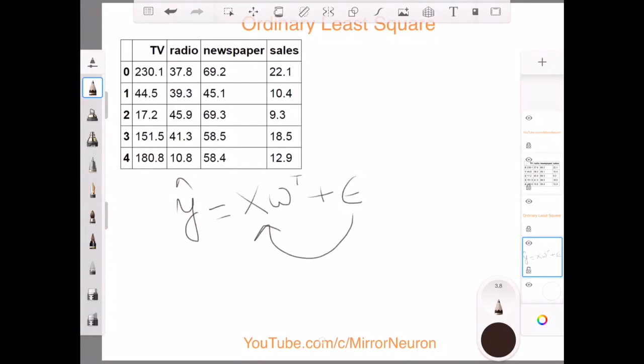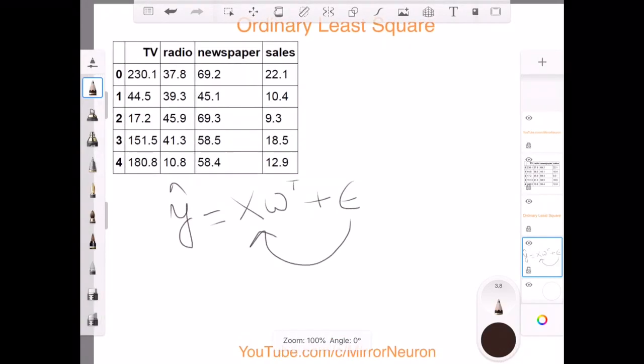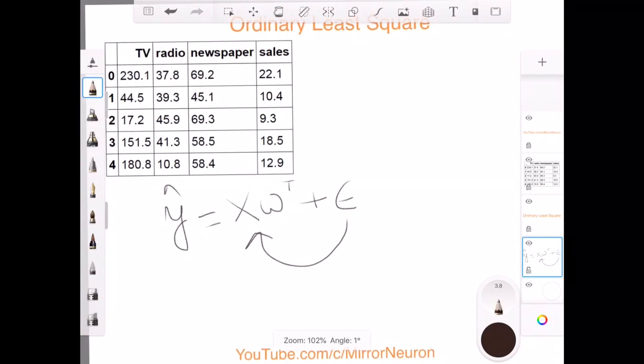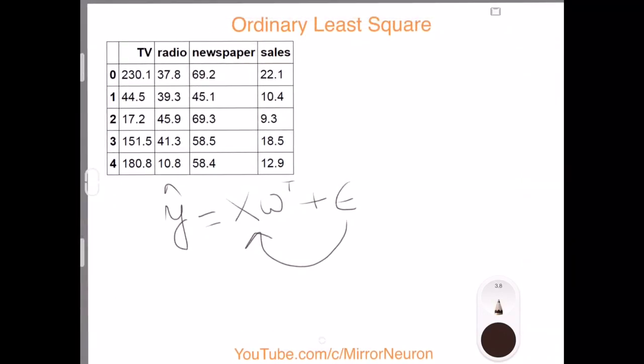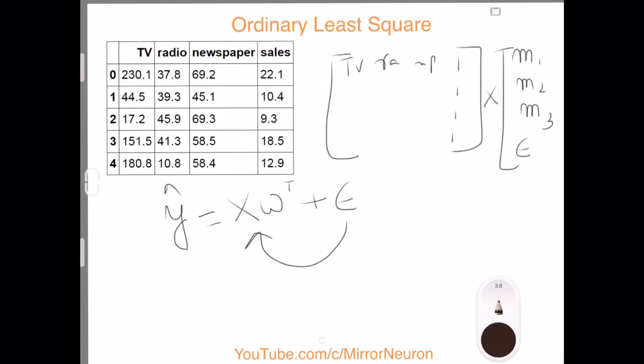Now what happens is it's a good idea to somehow include this error vector within this same matrix. So what we are going to do is—you've seen that matrix where we have all three columns, TV, radio, newspaper—so basically we are also going to include one, one, one for all the records. And in the weight vectors where we had m1, m2, m3, we can have this epsilon.